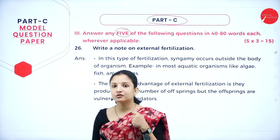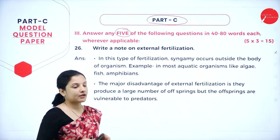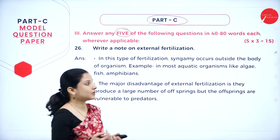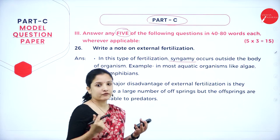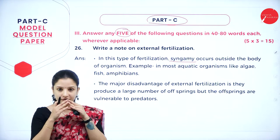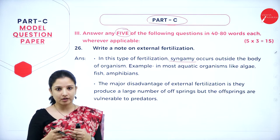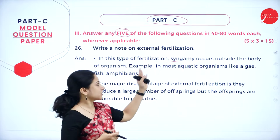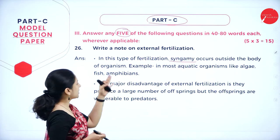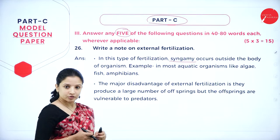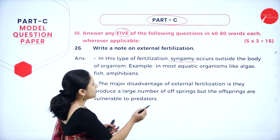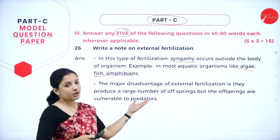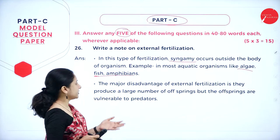The first question under Part C is: write a note on external fertilization. Start with a definition — it is a type of fertilization wherein syngamy occurs, meaning the fusion of the male sperm and the female egg takes place outside the body of an organism. If you forget the word syngamy, you can also write fusion or fertilization. Examples include most aquatic organisms like algae, fish, and amphibians.